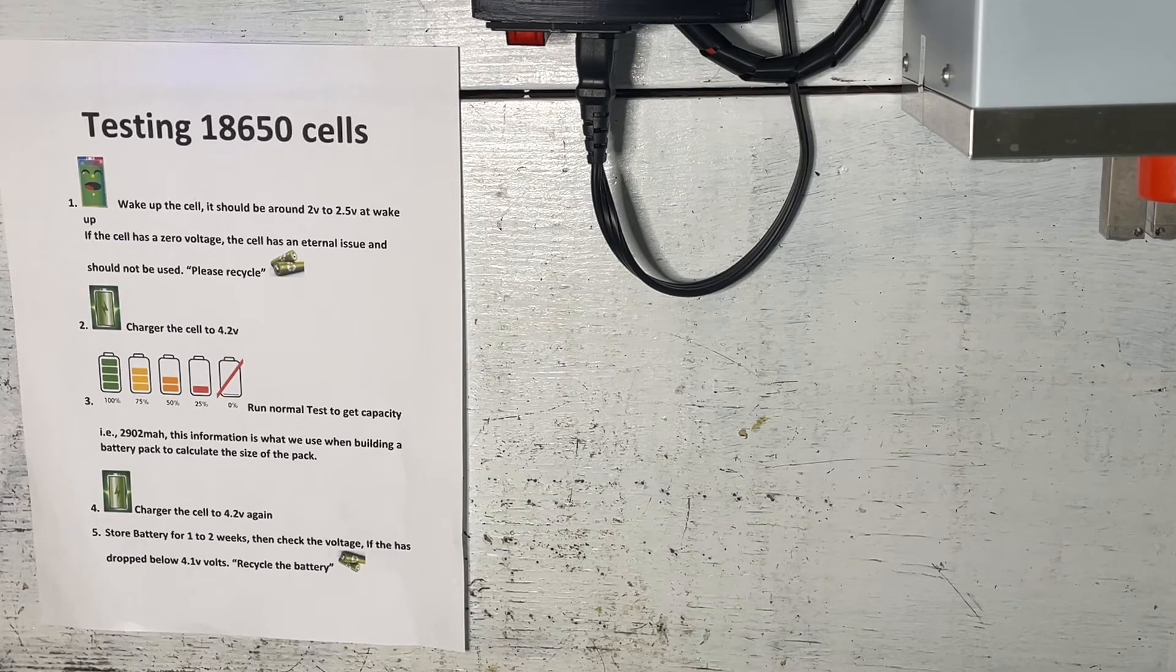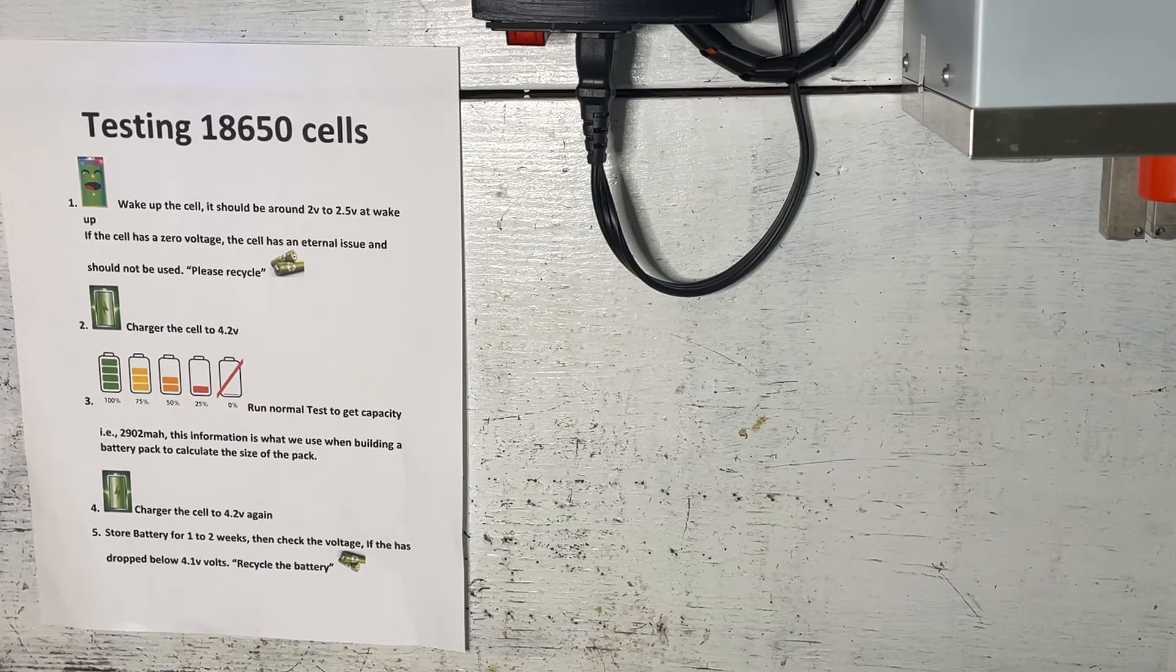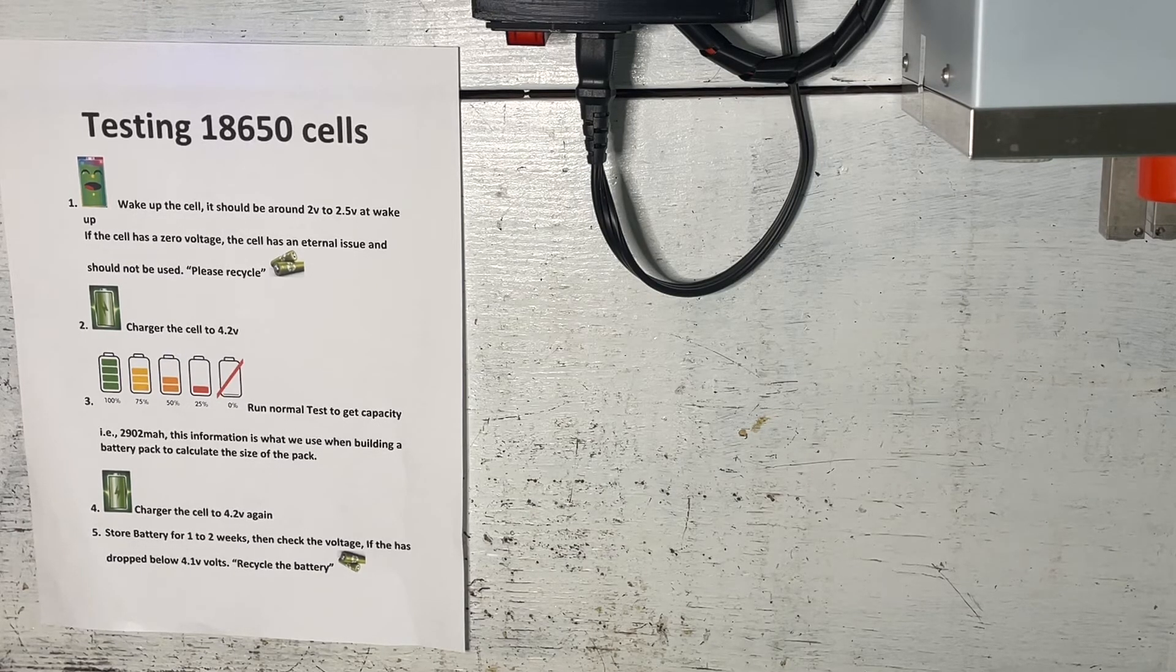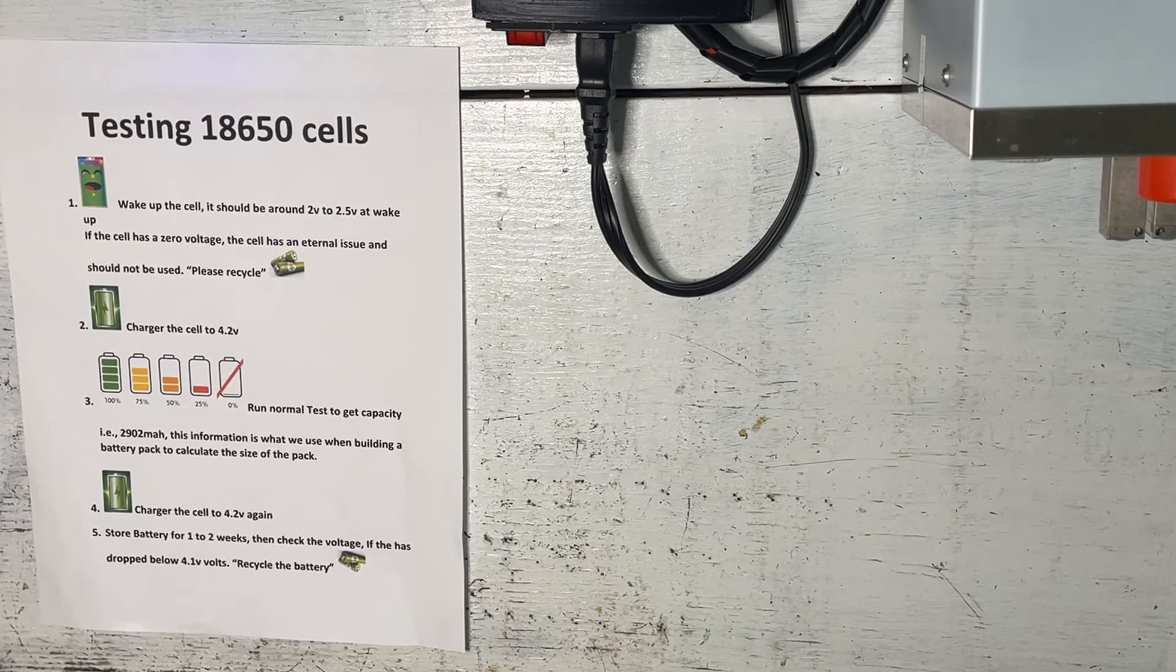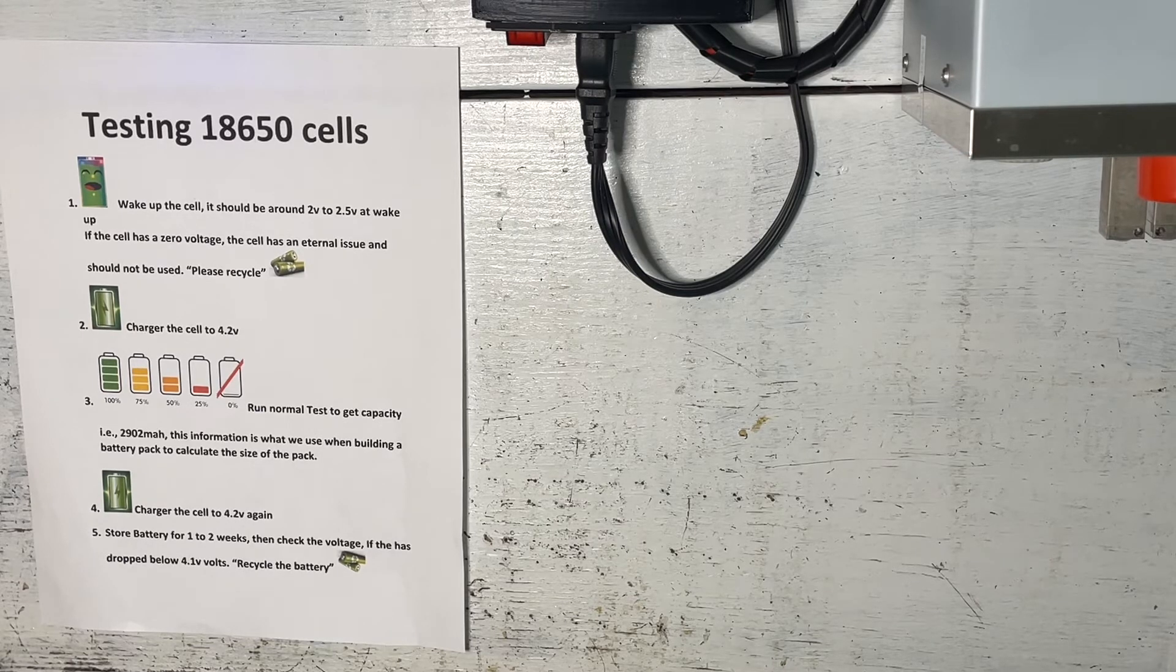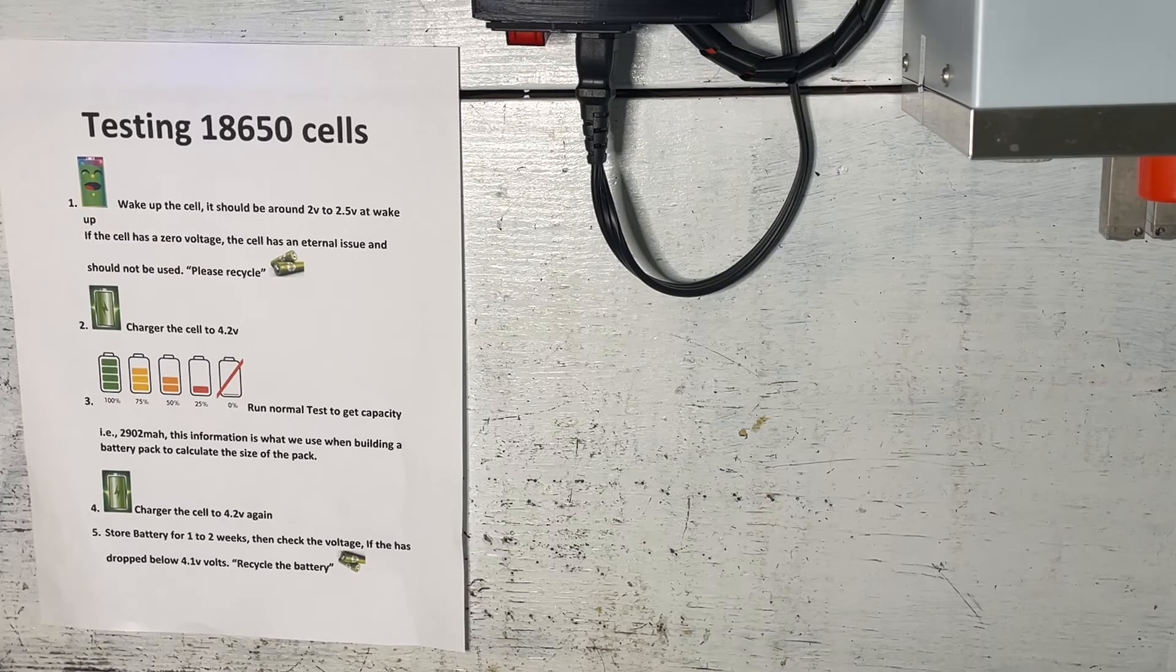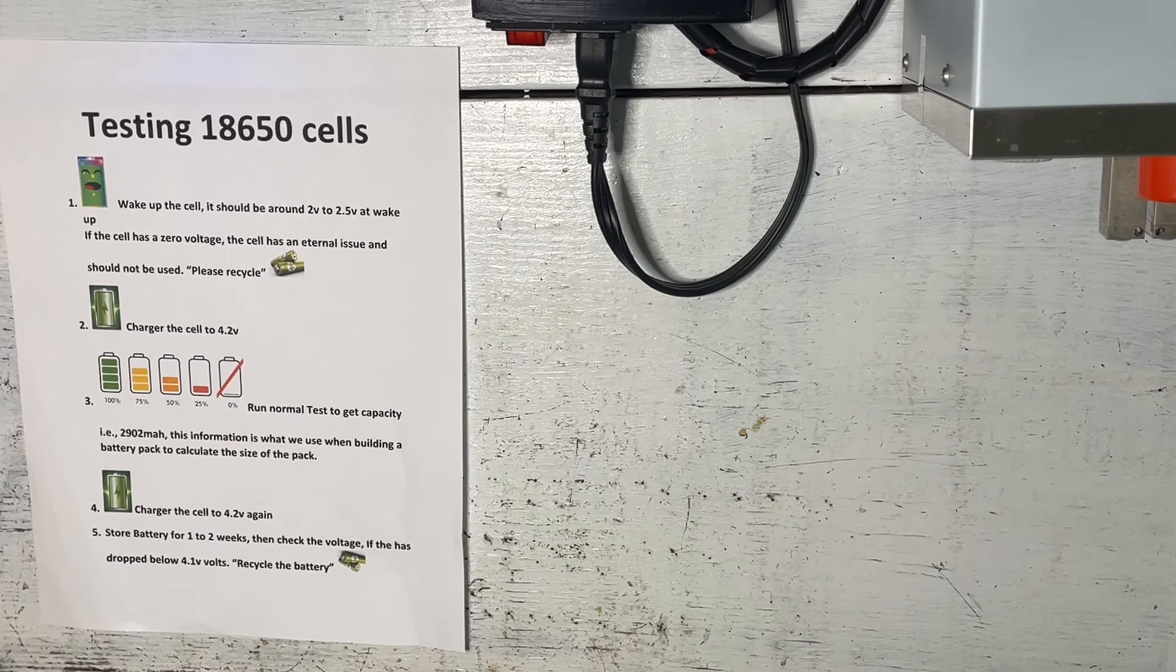Step 4: we want to go ahead and recharge all the cells once again to 4.2 volts. At that point we want to stick them aside in a bucket or somewhere for about one to two weeks. After that we want to make sure they're still holding that voltage, because from time to time you do get batteries which self-discharge, which means they have an internal issue and we don't want to use those batteries.